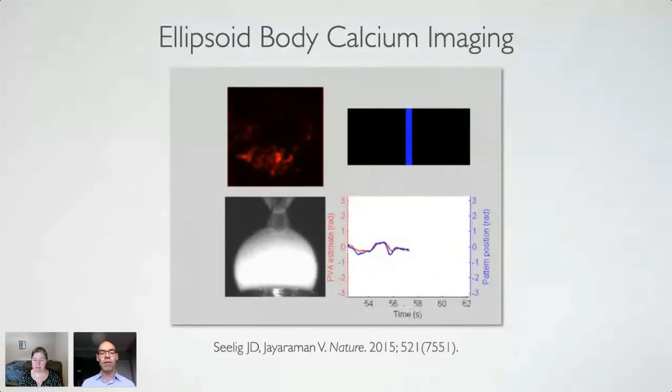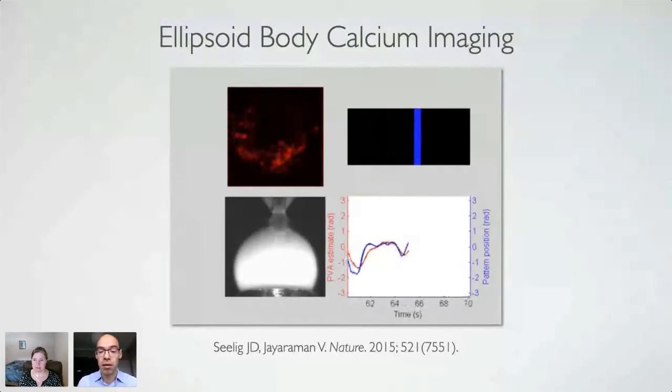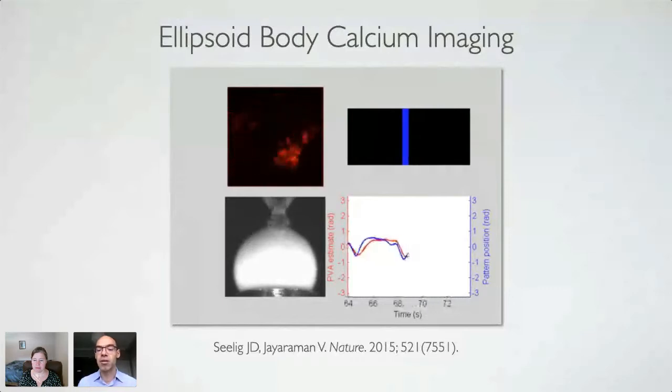Let's have a look at the donut-shaped structure, the ellipsoid body of a fruit fly. If you place a fruit fly in a virtual reality environment and look at its ellipsoid body, you can see a peak of calcium concentration that moves around the ellipsoid body as the insect rotates in respect to its visual surroundings. The blue line shows the actual heading of the fruit fly and the red line shows the heading decoded by looking at the calcium concentration around the ellipsoid body. If you turn off the visual stimuli, the calcium bump remains in place, suggesting a ring attractor-like operation.